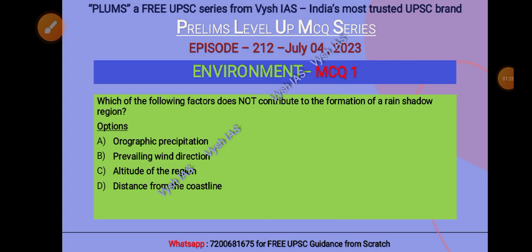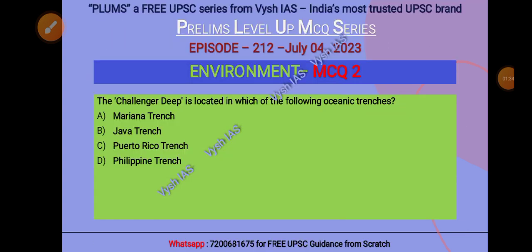Now the second question: the Challenger Deep is located in which of the following oceanic trenches? I think it's an easy one. The options are: A) Mariana Trench, B) Java Trench, C) Puerto Rico Trench, and D) Philippine Trench.